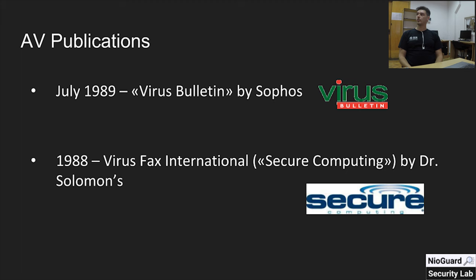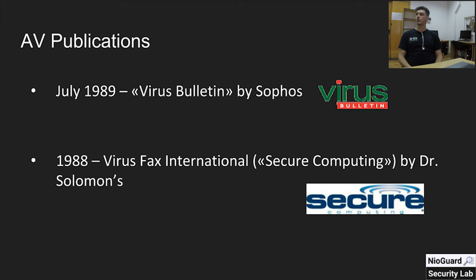In July 1989, Virus Bulletin magazine was started by Sophos. Two years later, the first antivirus conference took place, where security industry experts shared information about attacks. It is still ongoing — this year will be the 28th conference, taking place in London. Also in 1988, there was another magazine, Virus News International by Dr. Solomon's, now called Secure Computing.